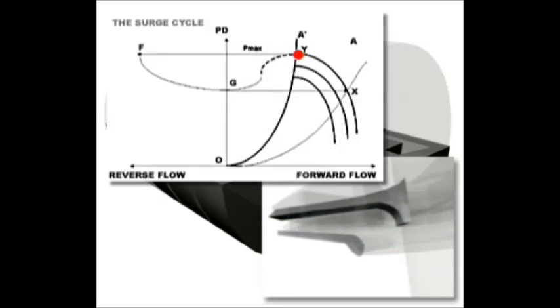The pressure in the downstream piping of the compressor is now higher than the delivered pressure of the impeller. Consequently, flow reversal from the downstream piping takes place through the impeller. This flow reversal will continue until the downstream pressure is below the pressure developed by the compressor.